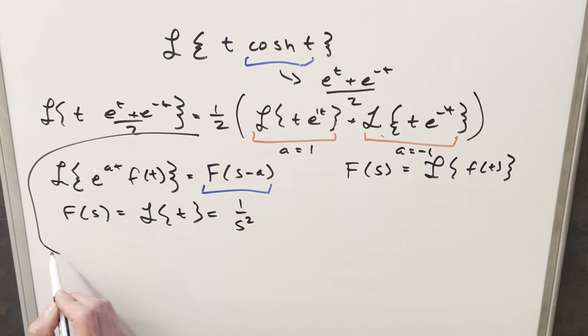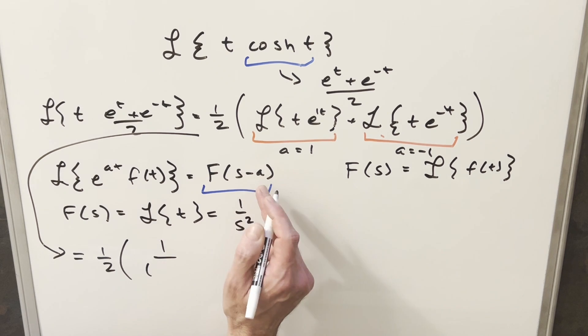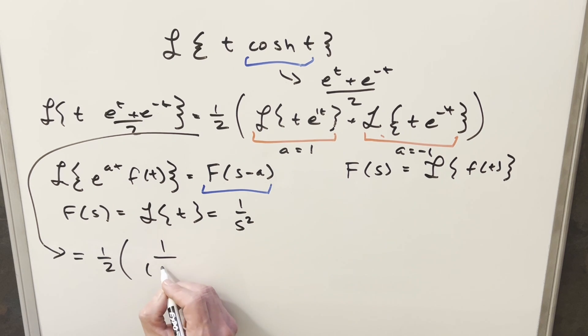We'll continue with this down here. We have our one half out front. For this one we're going to have our one over s squared, but we want to input s minus a. In this case it's going to be s minus one, so we're going to have s minus one squared here.